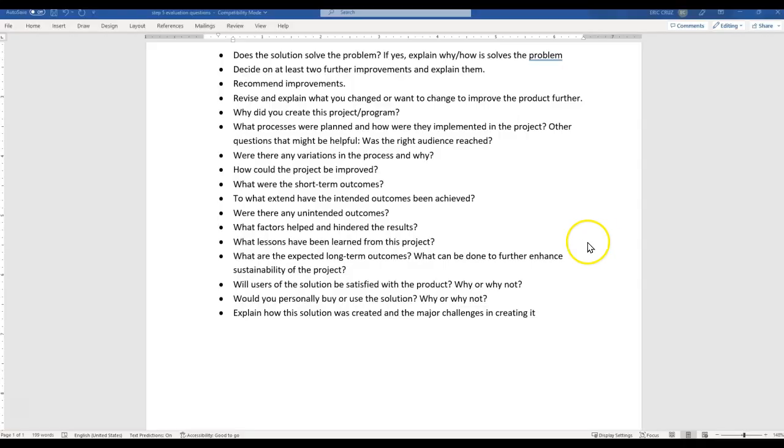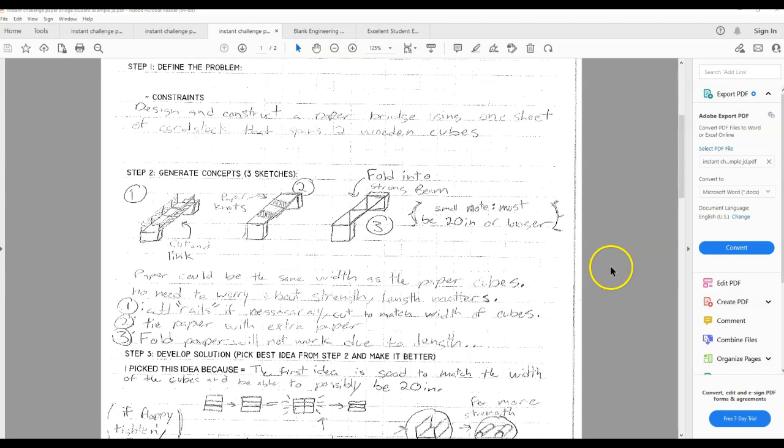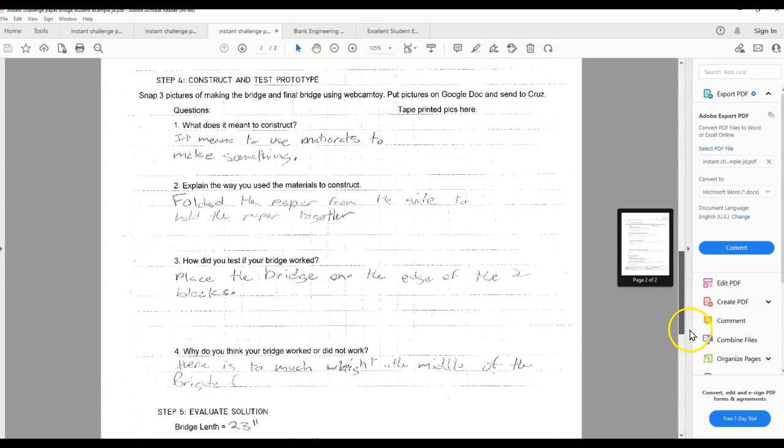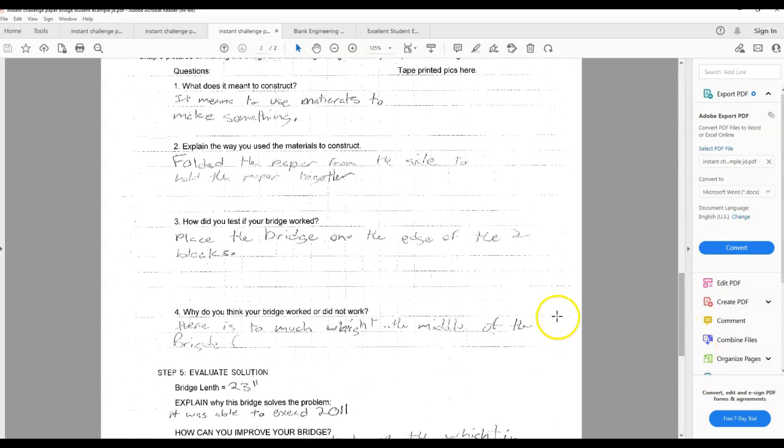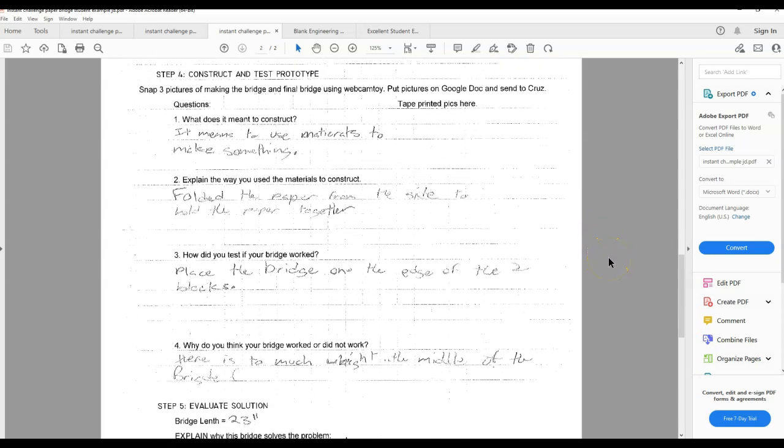Let me exit out of here and show, let's see if I have some more examples. Now these, let's go to step five on this one. I think this says step five. Okay. I used to include the questions for step five right on the paper. But then people started to rely on that and I don't want you to rely on that. I want you to know what the evaluation questions are and I want you to know how to put them into your own design process. The student is missing their pictures. So that is not a good example.